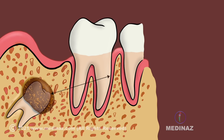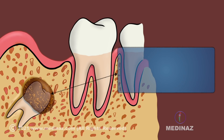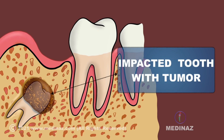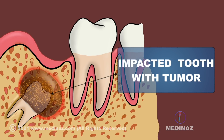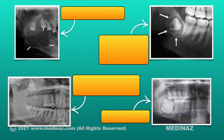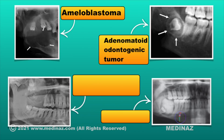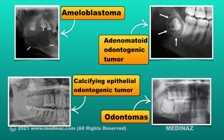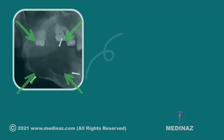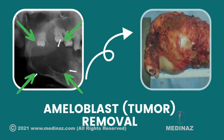Sometimes the impacted third molar can be associated with a dental tumor. Many times it does not cause any symptoms until it has grown to a significant size, and it can be identified on radiographic examination. Here you can see different tumors associated with third molars, like ameloblastoma, adenomatoid odontogenic tumor, calcifying epithelial odontogenic tumor, and odontomas. In such situations, the tooth will be extracted along with the associated tumor.